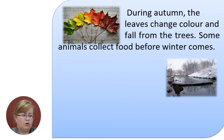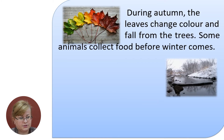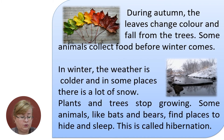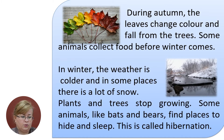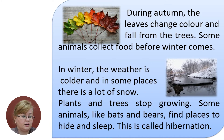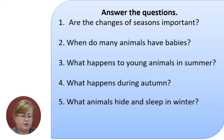During autumn, the leaves change color and fall from the trees. Some animals collect food before winter comes. In winter, the weather is colder. In some places, there is a lot of snow. Plants and trees stop growing. Some animals, like bats and bears, find places to hide and sleep. This is called hibernation.